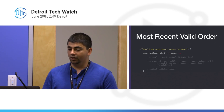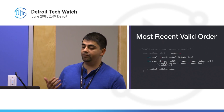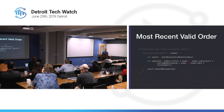Going back to our mostRecentValidOrder example, we use our orders generator to produce a list of orders and get our result. To assert against it, we use standard functions we know and trust in Kotlin: filter to get only successful orders, sort by date, then use firstOrNull to grab the first value or return null. Then we assert against that expected value.